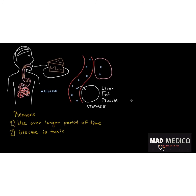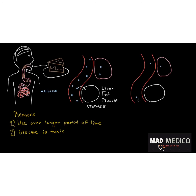Now we're faced with a conundrum. A couple of hours after eating the cake, there's very little glucose left in your blood. Your brain cells still need some glucose to survive, and you still have your storage cells. At this point, when there isn't too much glucose in your blood, you don't want your storage cells to be taking in more glucose. So the question is: how do your storage cells know when to take glucose in and when not to?